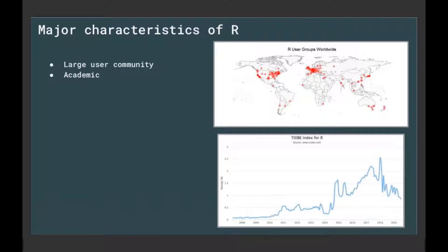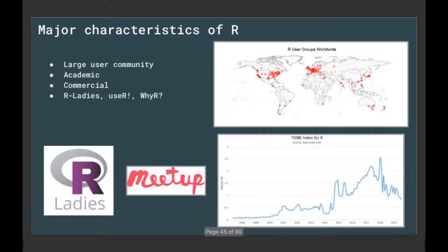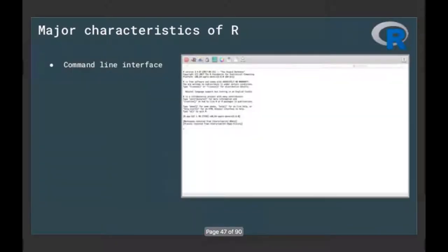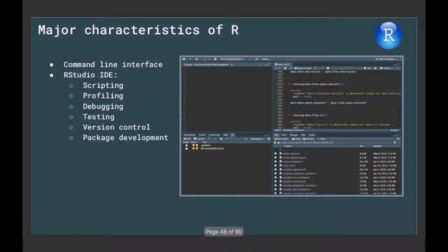R is very popular. The TIOBE index — a way of ranking software language popularity — shows R currently at number 20 of all languages tracked, with a time series going back to 2008. R is used widely in academic and commercial settings, with many local support groups. For development, you can use the command line or an integrated development environment like RStudio, which facilitates scripting, software profiling, debugging, testing, version control, and package development.